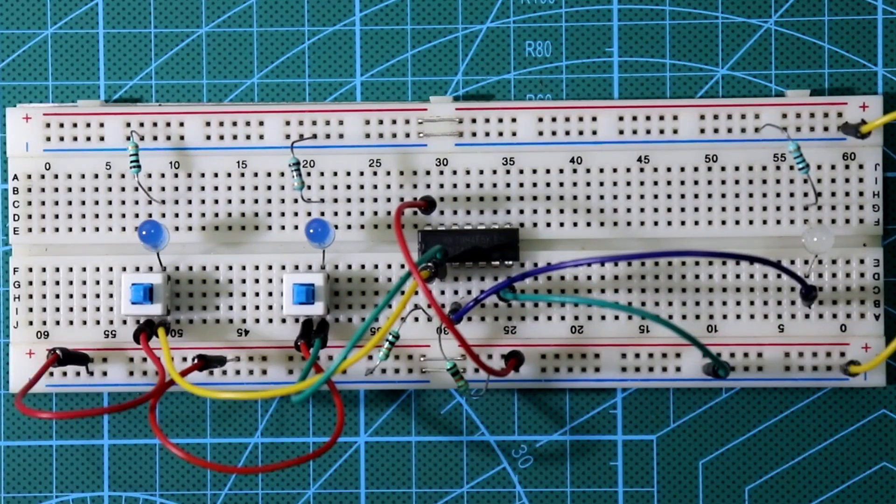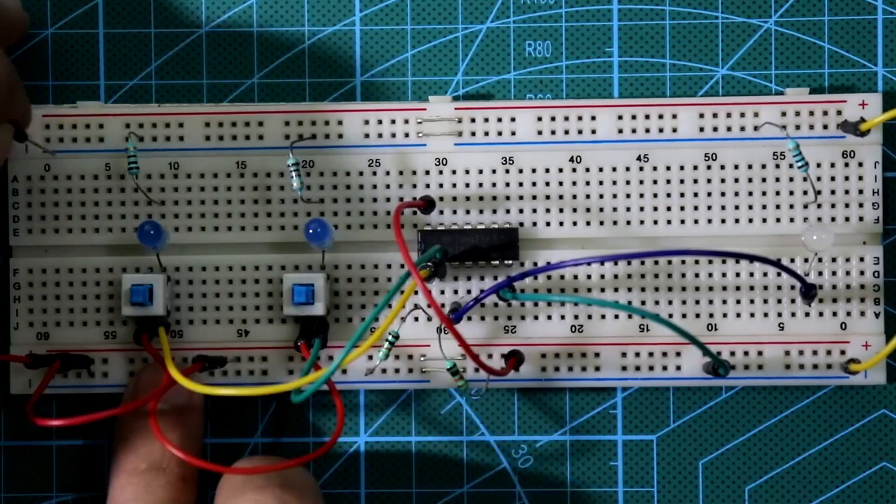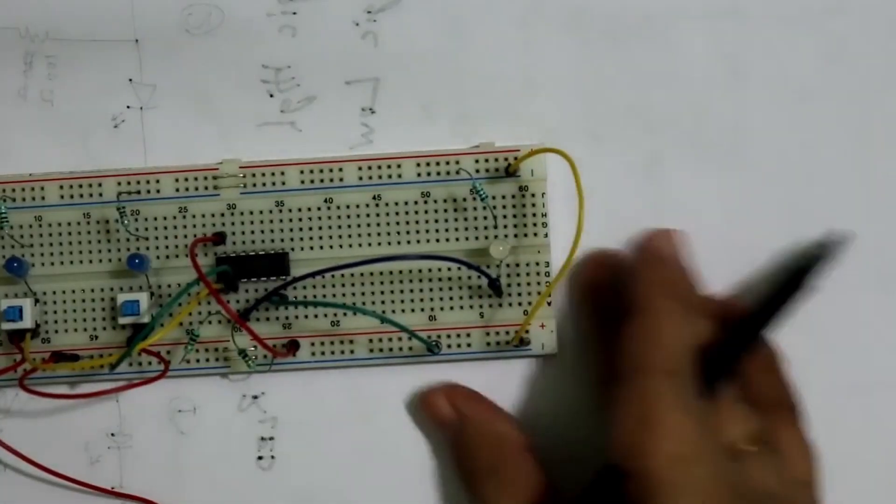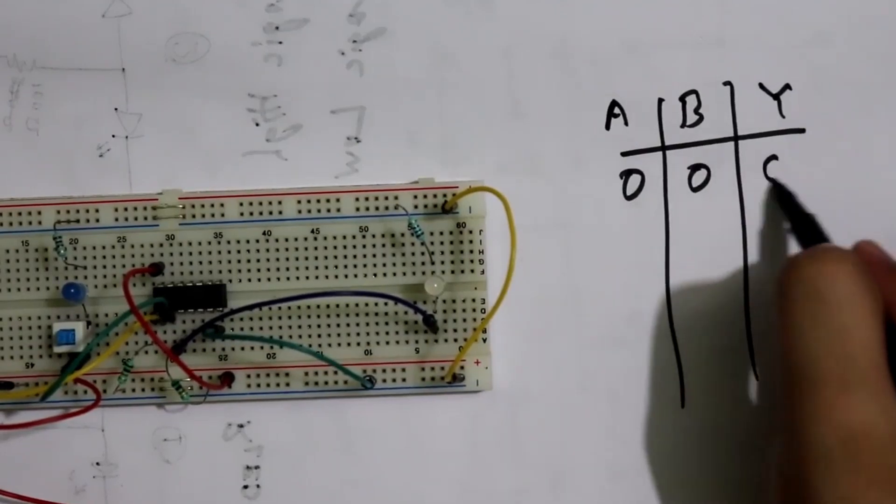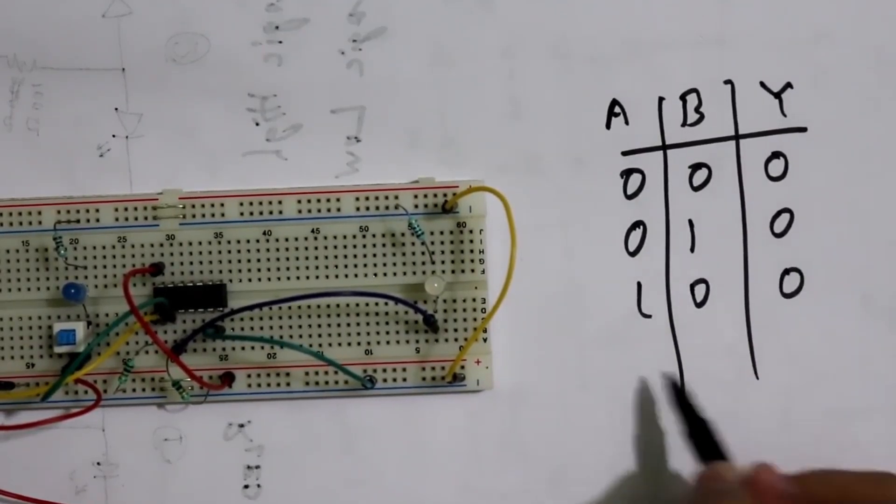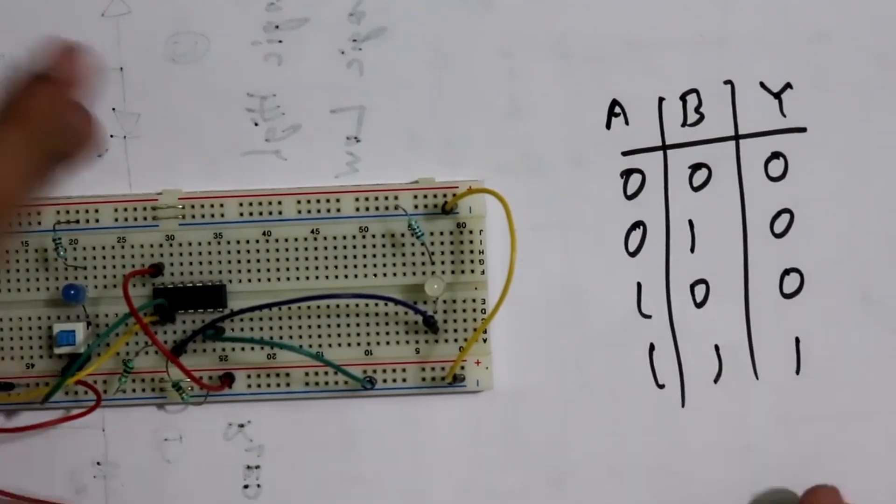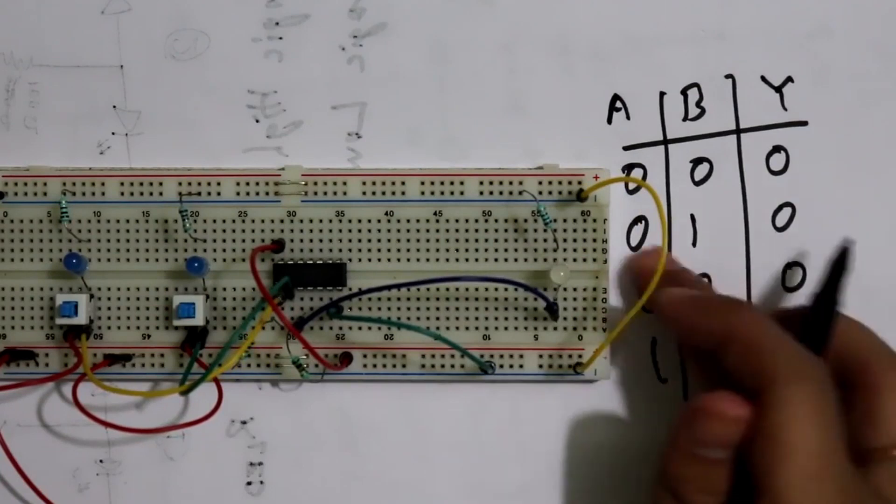So our circuit construction is completed. Now let's connect the power supply here. Plus VCC and ground here. We know the truth table of AND gate is 0 0. We will get 0 0 0, 0 1 0, 1 0 0, 1 1 1. Here we are not providing any input. So we are getting 0 here. So 0 0 0.